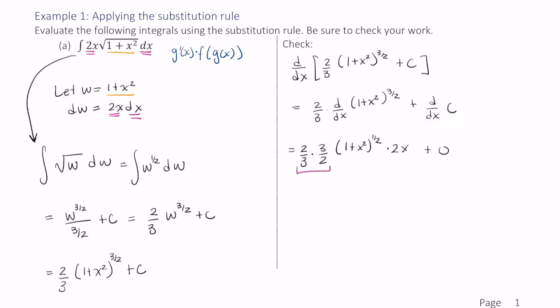And as you can see here, 2 thirds times 3 halves is equal to 1. So we have the square root of 1 plus x squared times 2x, which I can rewrite using the commutative property of multiplication as 2x times the square root of 1 plus x squared. And if you notice, our original integrand here matches what we ended up with our derivative. So I know that my solution here is correct.